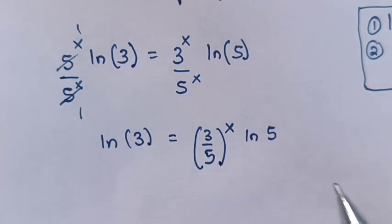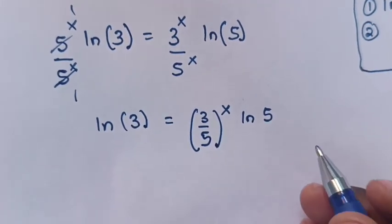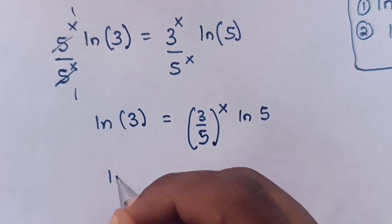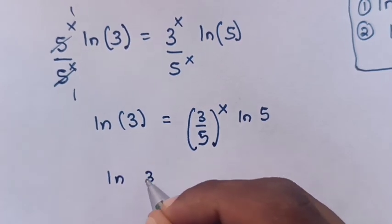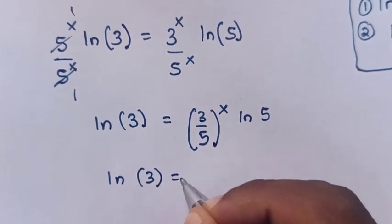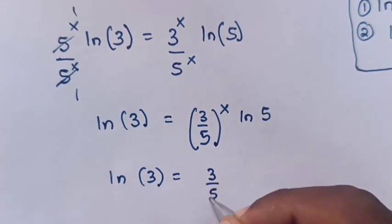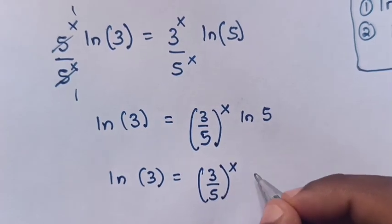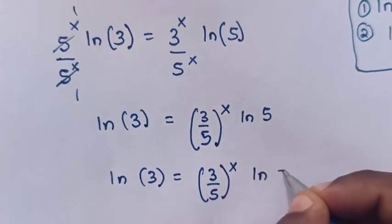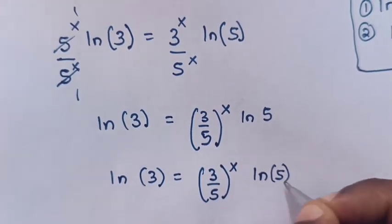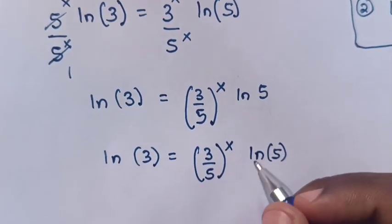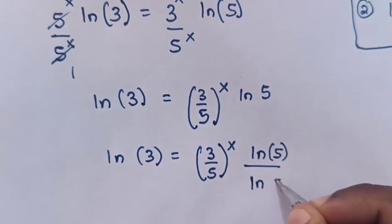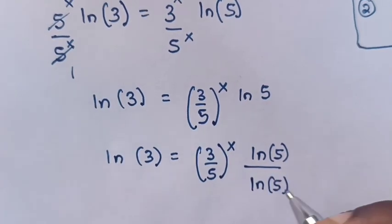Then from our equation log(3) = (3/5)^x · log(5), we will divide both sides by log(5).